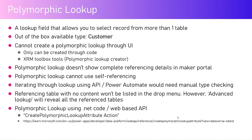We can establish a one-to-many relationship between different lookup tables using the lookup data type. There is an out-of-the-box type called 'customer,' but this does something different — it allows you to look up either the Contacts table or the Accounts table. We cannot create a polymorphic lookup through the UI; the only way is through code. There is another tool called XRM Toolbox which allows us to create a polymorphic lookup very quickly.